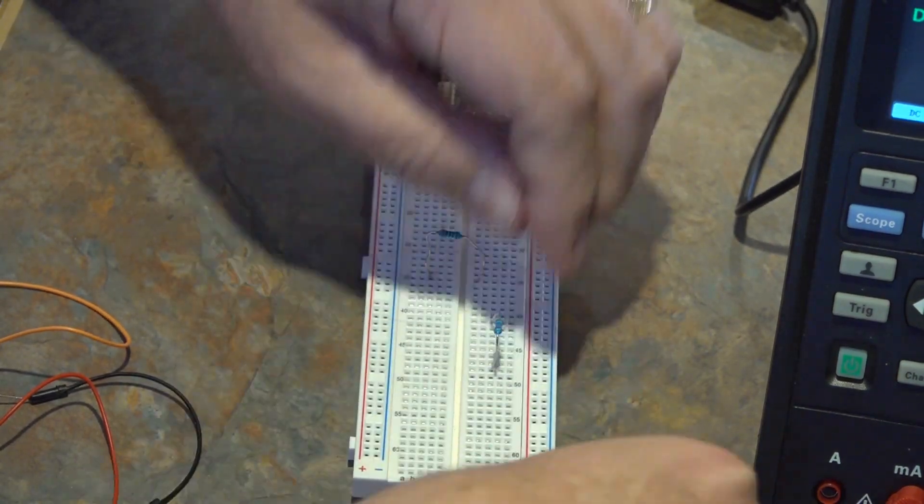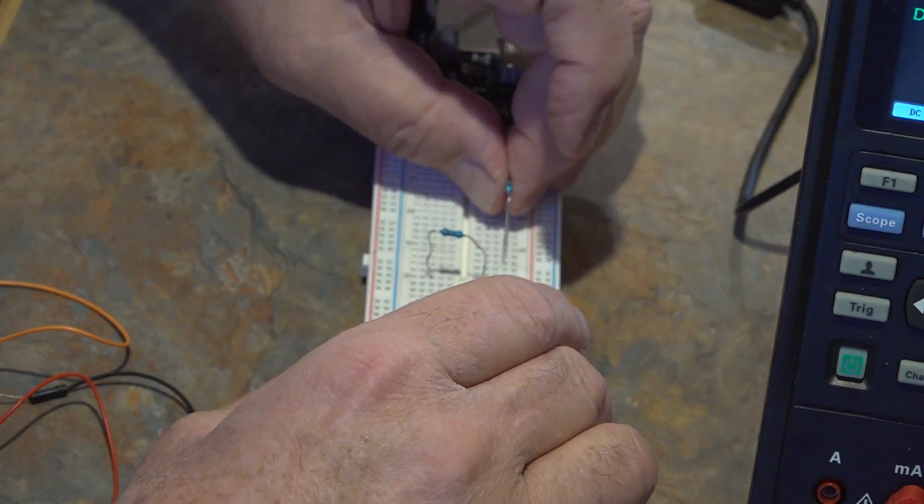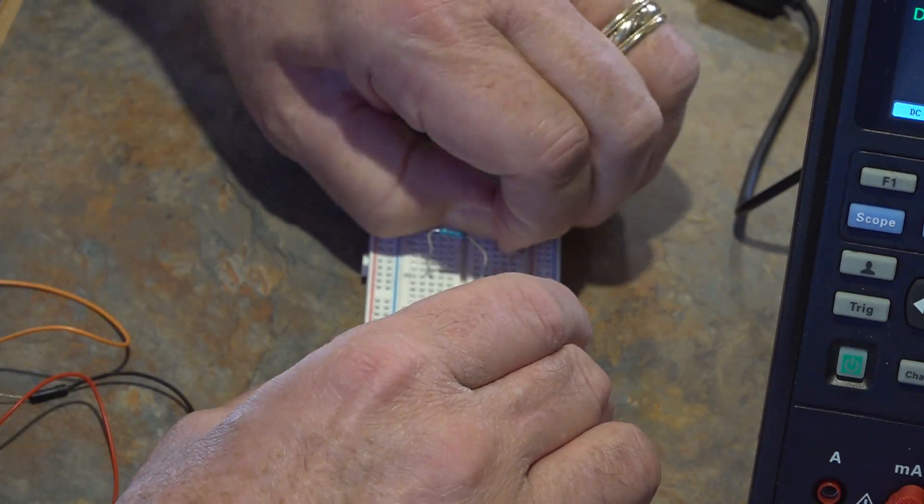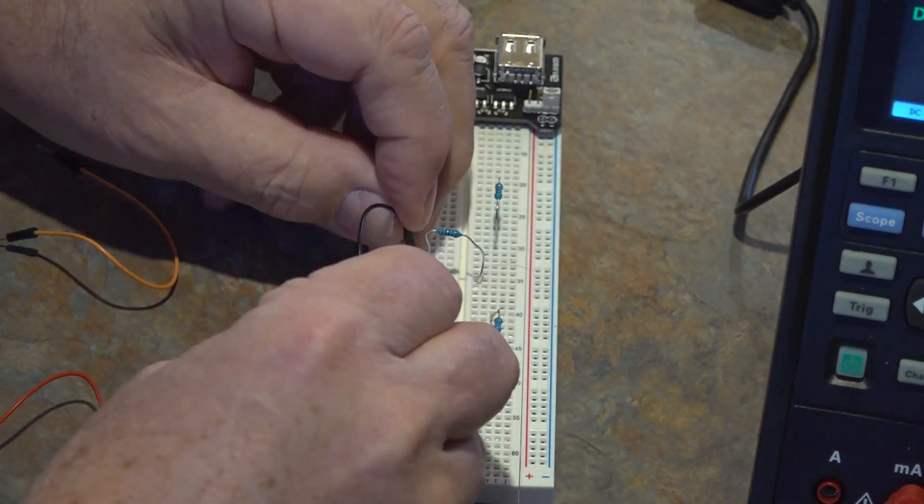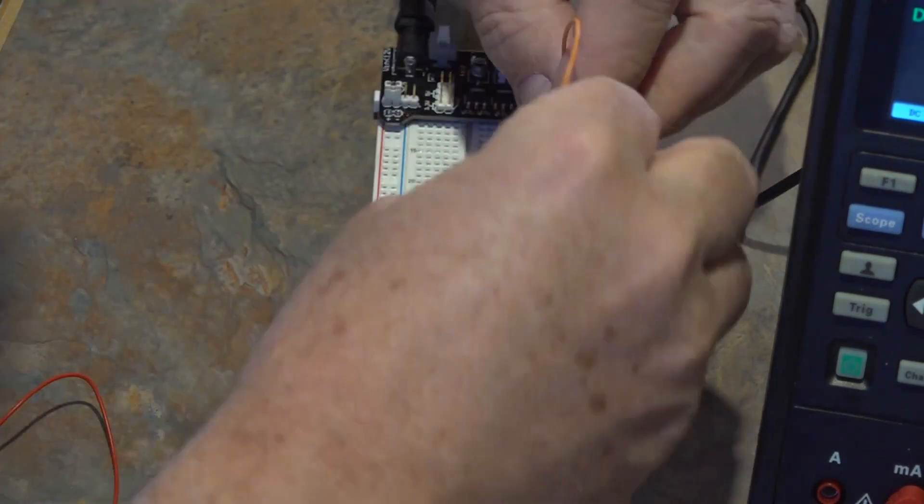Some of the pointers I should point out, I found that these resistors the wires were kind of thin and kind of hard. So if you have a pair of needle nose pliers it'll make inserting the resistors into the breadboard a bit better.